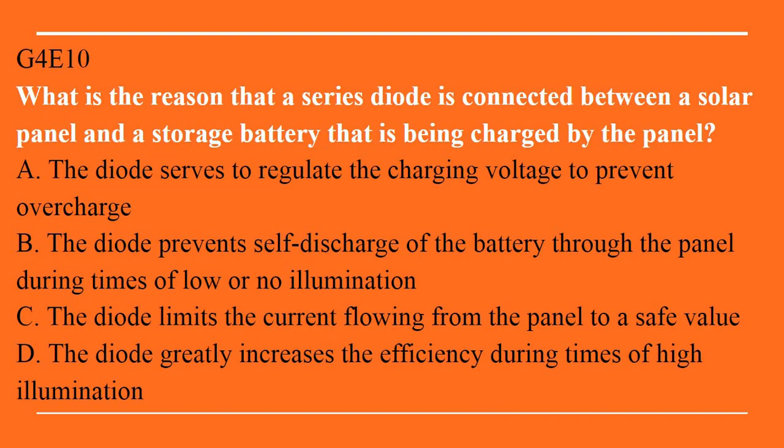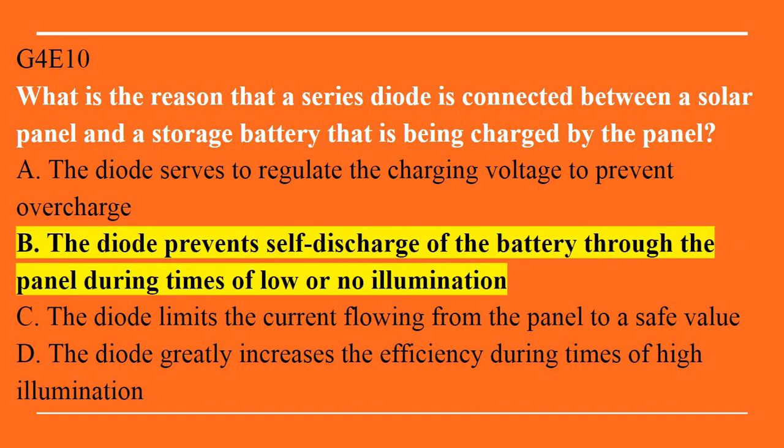G4E10: What is the reason that a series diode is connected between a solar panel and a storage battery that is being charged by the panel? A. The diode serves to regulate the charging voltage to prevent overcharge. B. The diode prevents self-discharge of the battery through the panel during times of low or no illumination. C. The diode limits the current flowing from the panel to a safe value. Or D. The diode greatly increases the efficiency during times of high illumination. Answer is B. The diode prevents self-discharge of the battery through the panel during times of low or no illumination.